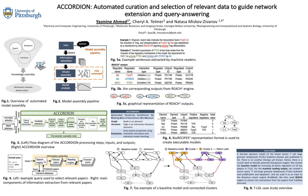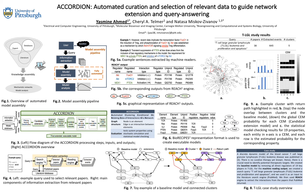There is no curative therapy yet known for this disease, so there is a crucial need to identify potential therapeutic targets. We created the baseline model by removing all direct regulations of 19 key players in the TLGL network model. For the machine reading output, we created a search query — T-cell large granular lymphocyte leukemia, proliferation, and apoptosis — and used it as input to PubMed. We then used the REACH engine to extract interactions from the papers that PubMed returned.